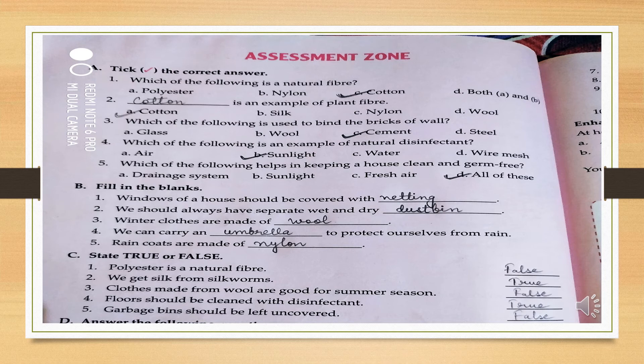Now the third question: state true or false. You have to read the sentence and say whether it is true or false - correct or wrong. First statement: polyester is a natural fiber. Polyester is a man-made or synthetic fiber, not a natural fiber, so this sentence is false. Please write false over there and write the correct spelling: F-A-L-S-E.